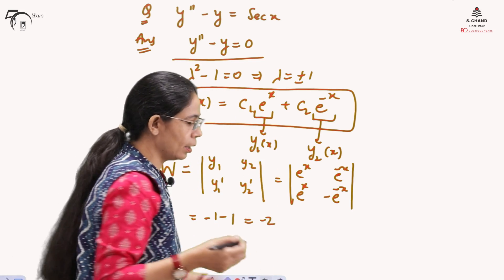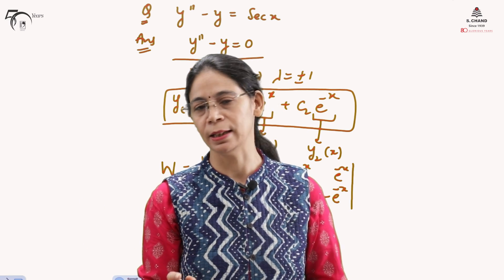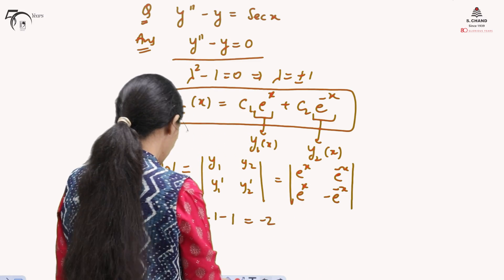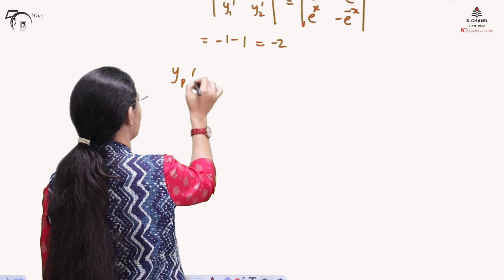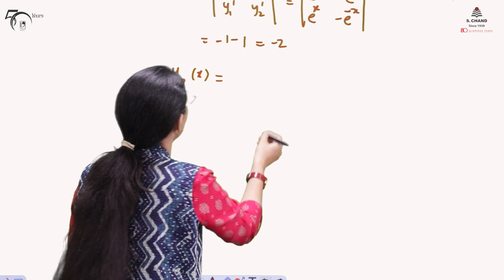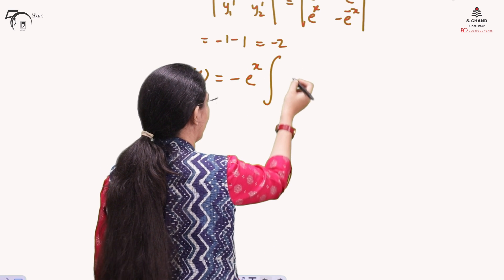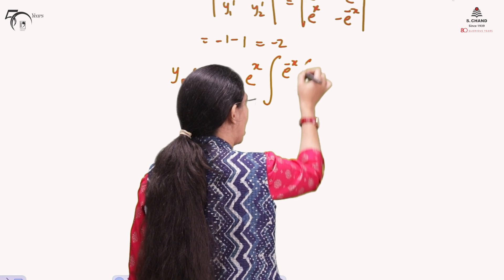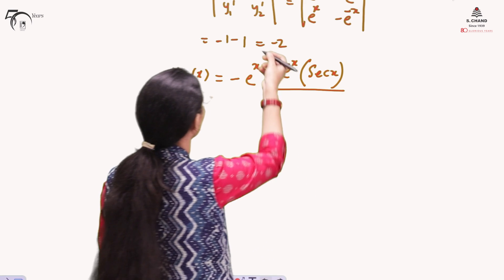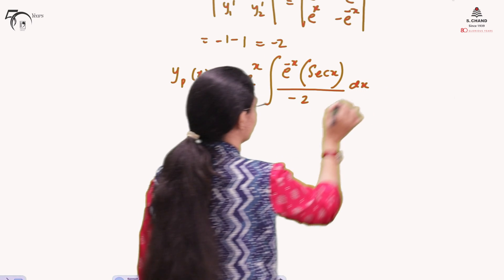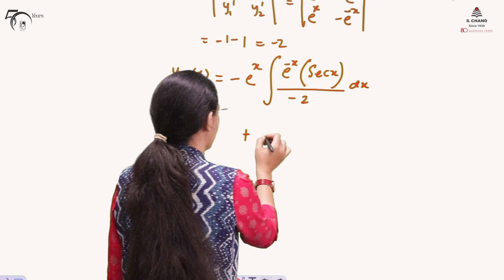The Wronskian is not zero, confirming linear independence as expected. Now we apply the formula to write down yp(x). The particular integral yp(x) is written as: minus y₁(x) times the integral of [y₂(x) · r(x) / W] dx, where y₁ = e^x, y₂ = e^(−x), r(x) = sec(x), and W = −2.